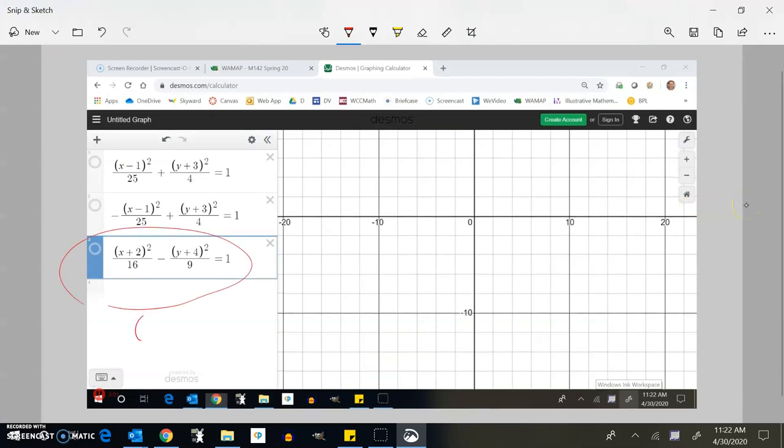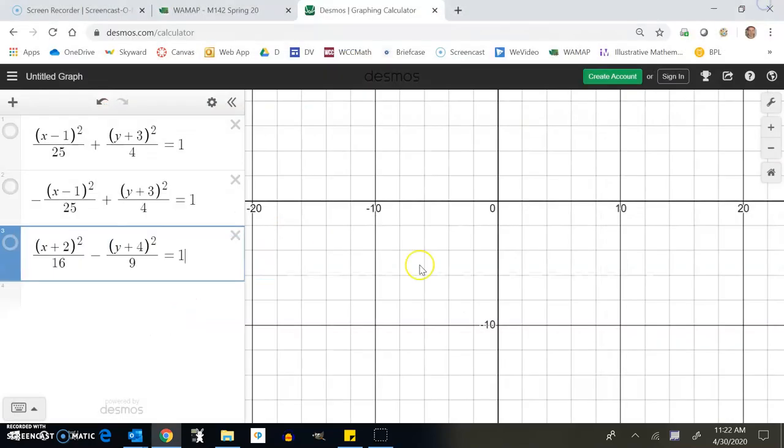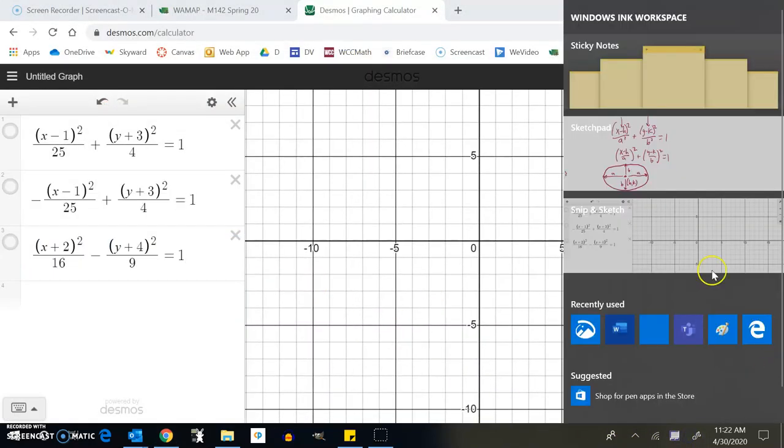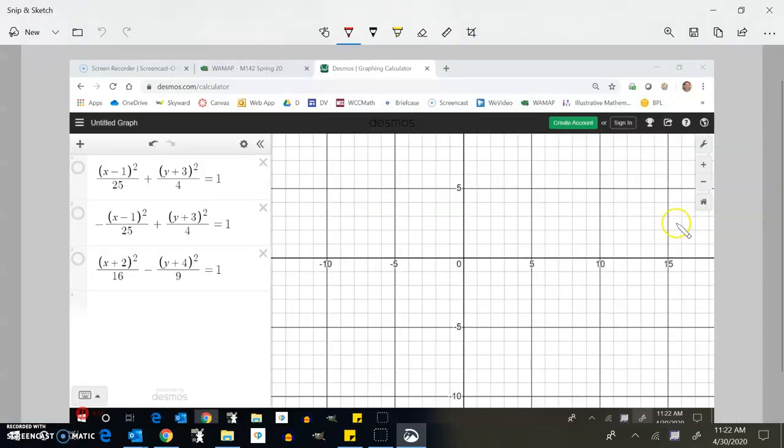So first off, I know my center is at negative 2, what makes that 0? Negative 4, what makes that 0. So negative 2. Oh, let me change my scale. Sorry. There we go. Negative 2, negative 4. So there's my center right there.